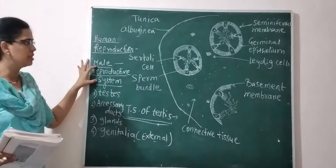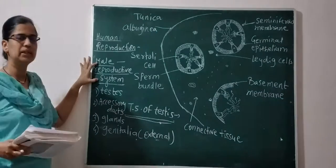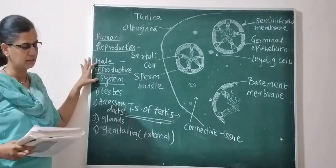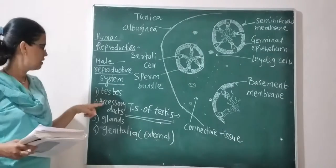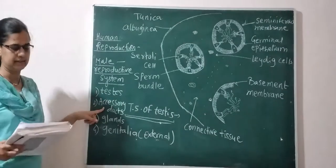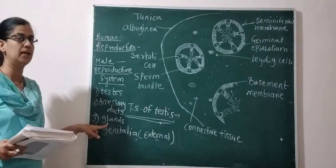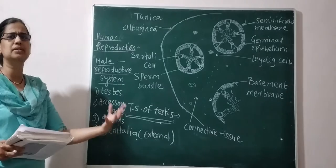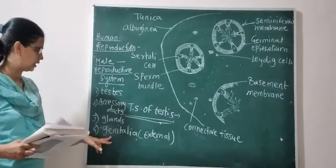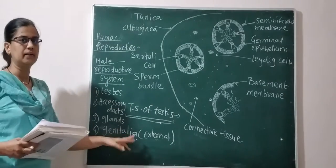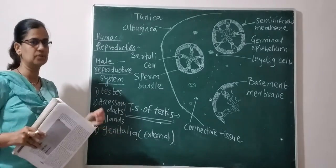First, we discuss the male reproductive system. In the male reproductive system, primary male organs are involved — these are the testes. There are accessory ducts and glands involved, with many secretions from the glands. There are also internal and external genitalia associated with the male reproductive system.